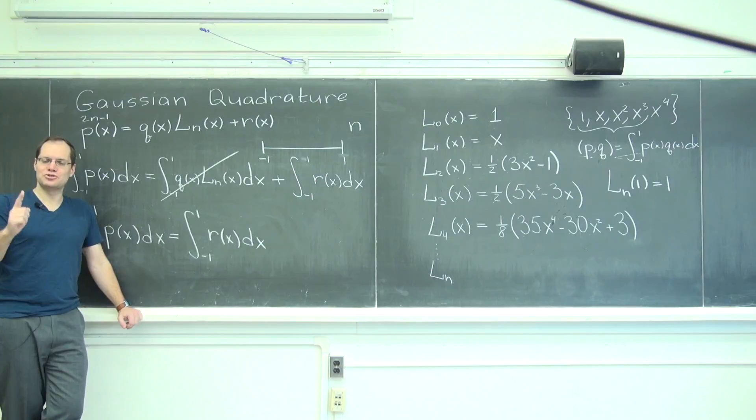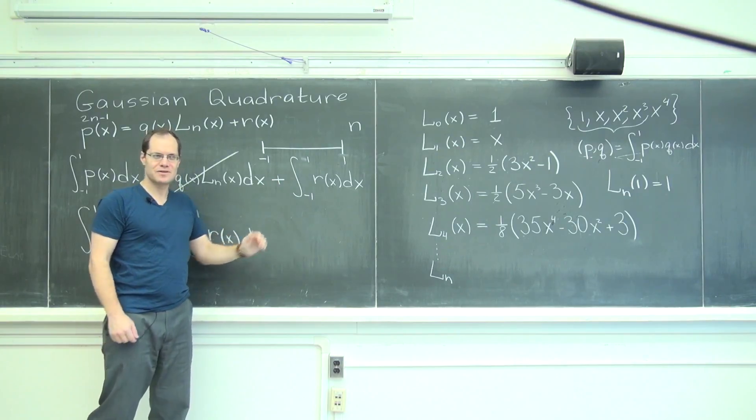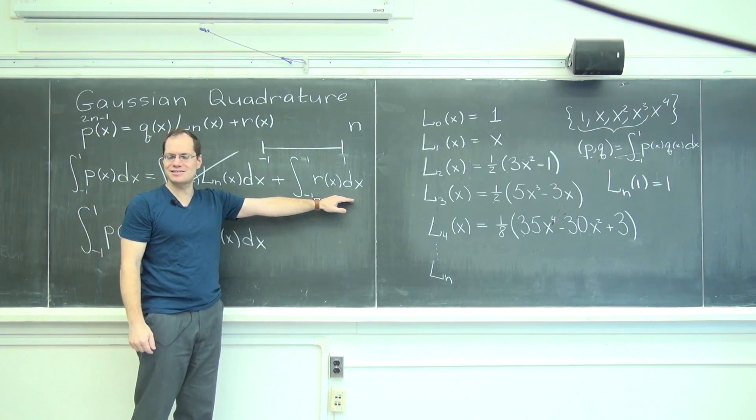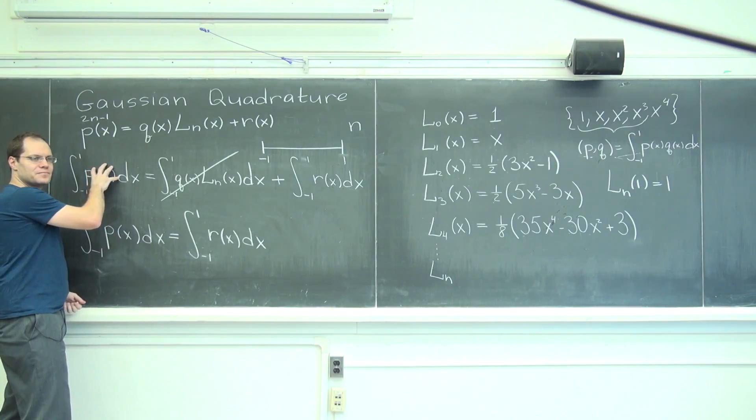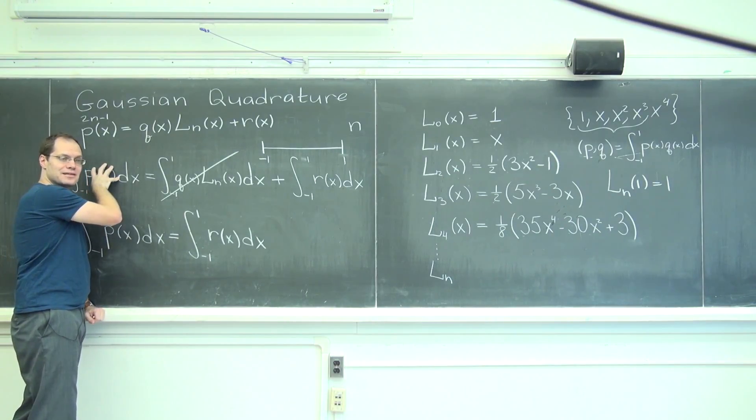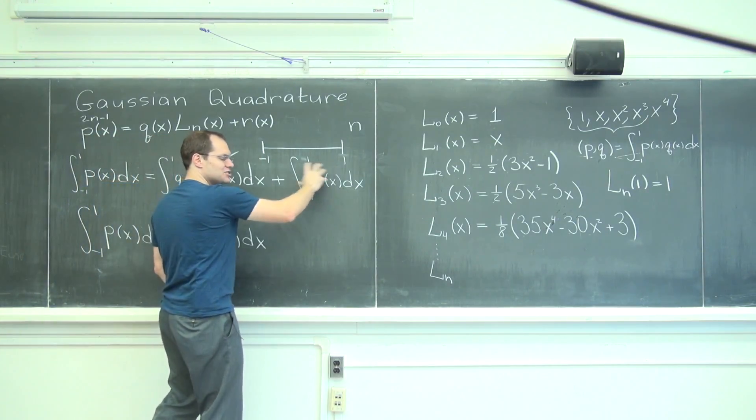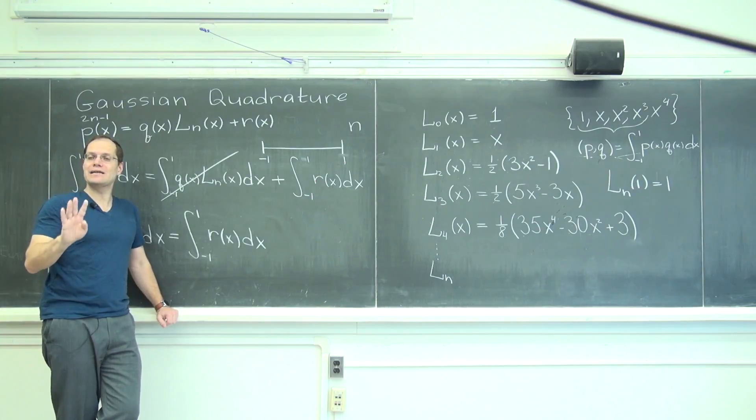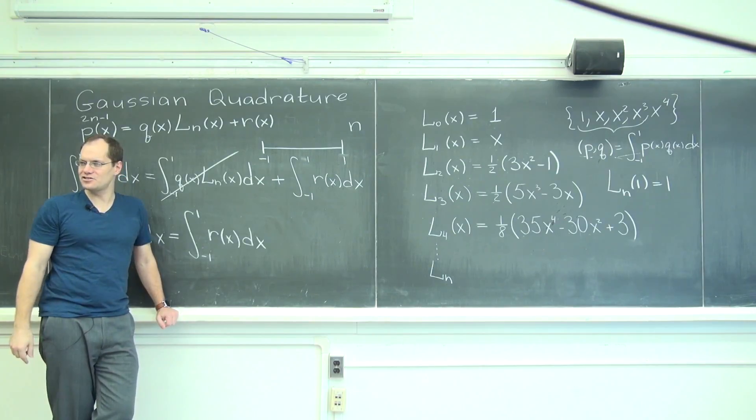Now, I will choose my points here and my weight so that I get this part exactly. And so the result needs to be 0. And I will get this part exactly. And so this polynomial, excuse me, this integral evaluated quote unquote approximately according to the Gaussian quadrature scheme will match this exactly and will match this exactly. So to get this part right, I will choose my n points to be the n zeros of the nth Legendre polynomial.